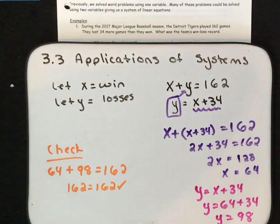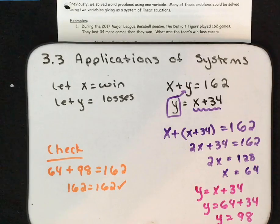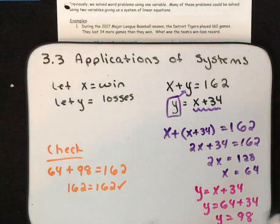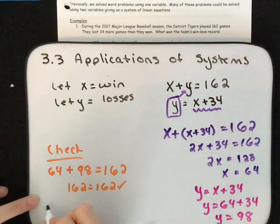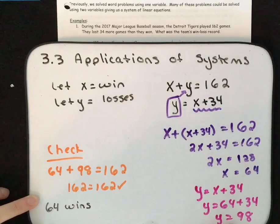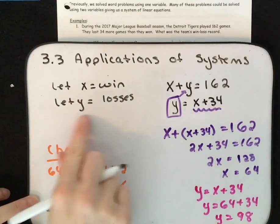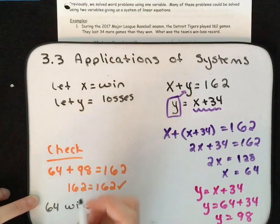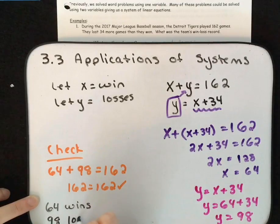When doing an application problem, always explain what your result means. Our X value equals 64, so that means 64 wins. Our Y value is 98, and we said Y was losses, so that means 98 losses.